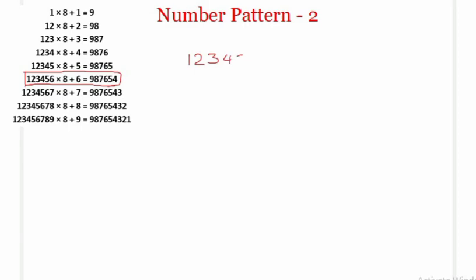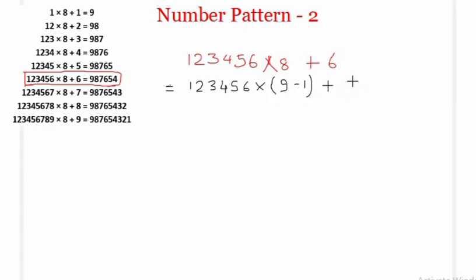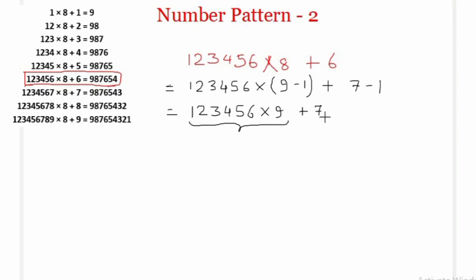As before, we write 8 as (9 − 1), so 123456 × (9 − 1) + 6. Since 6 is the same as (7 − 1), the expression becomes 123456 × (9 − 1) + (7 − 1). Applying the distributive law: 123456 × 9 − 123456 + 7 − 1, which we can group as 123456 × 9 + 7 − (123456 + 1) = 123456 × 9 + 7 − 123457.